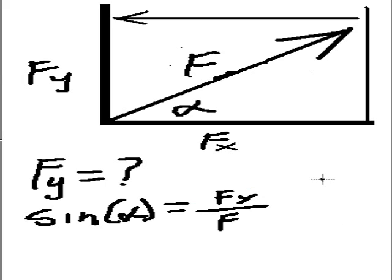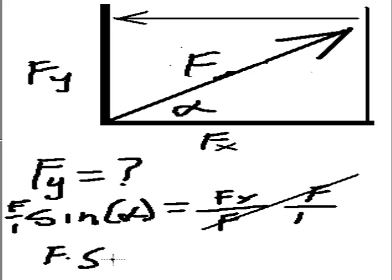Now, what do we do to get f of y? I multiply both sides by f over 1. f over 1. And what does that do? Well, it cancels out these two guys. And what does that leave me with? It leaves me with f times the sine of alpha is equal to f of y.